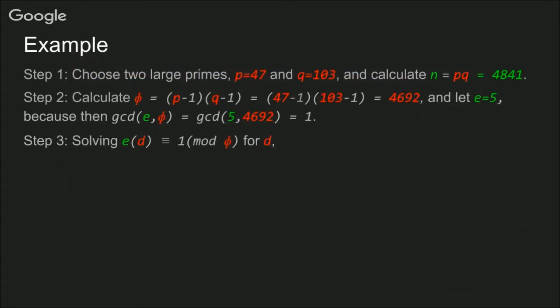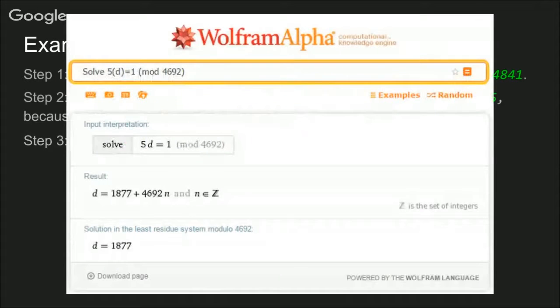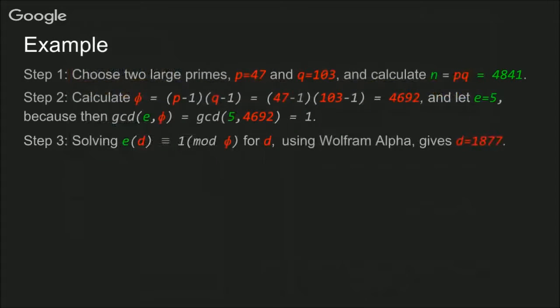Step three is to solve for the decryption key, D. And we use this equation, E times D is equal to 1 mod φ. Now if we plug those numbers into a calculator, we get that D is equal to 1877. That's our decryption key.